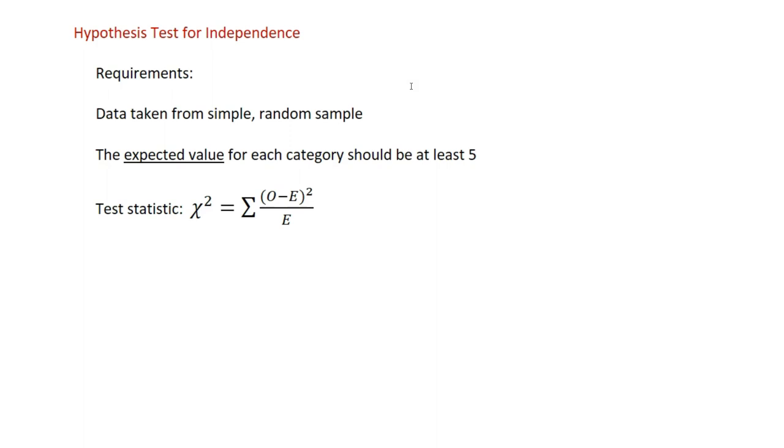If we're going to conduct a hypothesis test for independence, we have the same requirements that we do for the goodness of fit test. We should use data taken from a simple random sample. The expected value for each category should be at least five. And our test statistic is the chi-square test statistic, which is defined in the same way. We take the sum of observed minus expected values squared, divided by their expected value, and we add that up for each category.